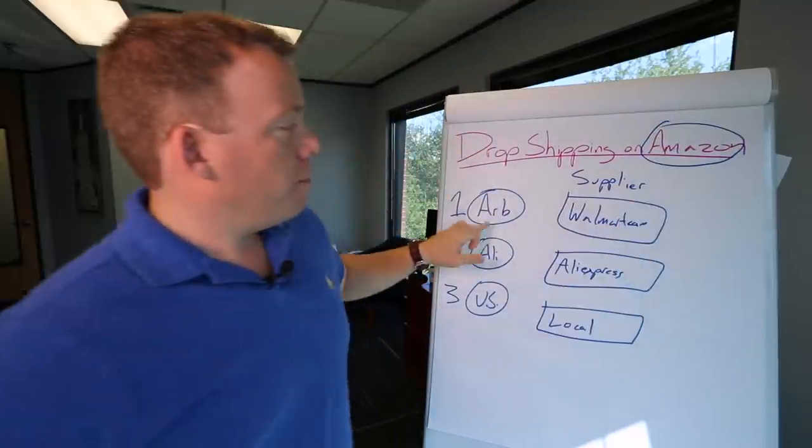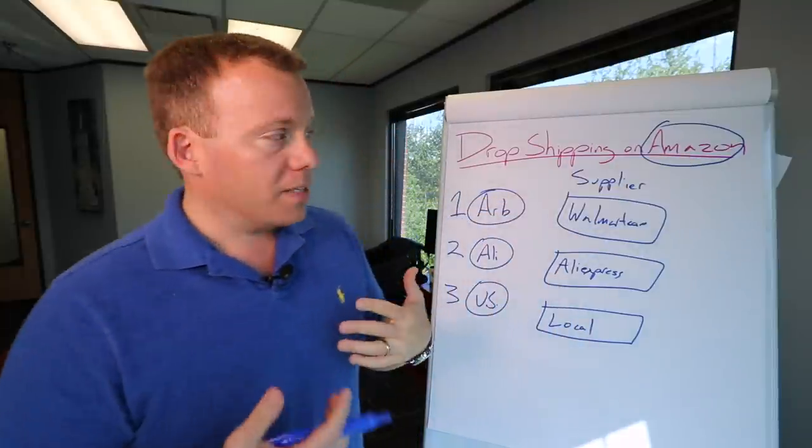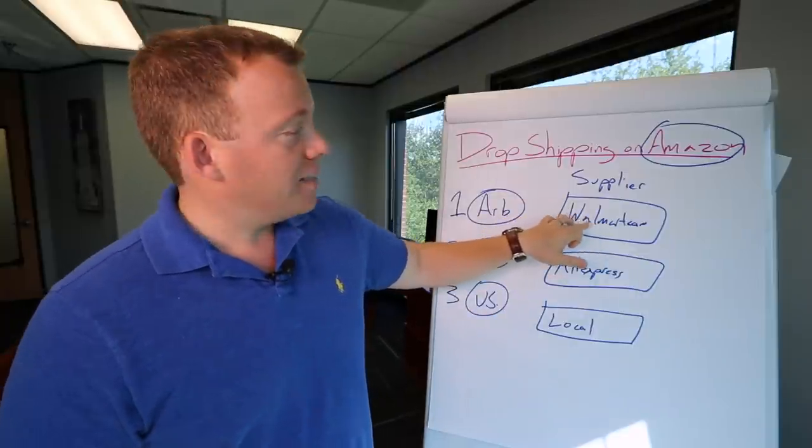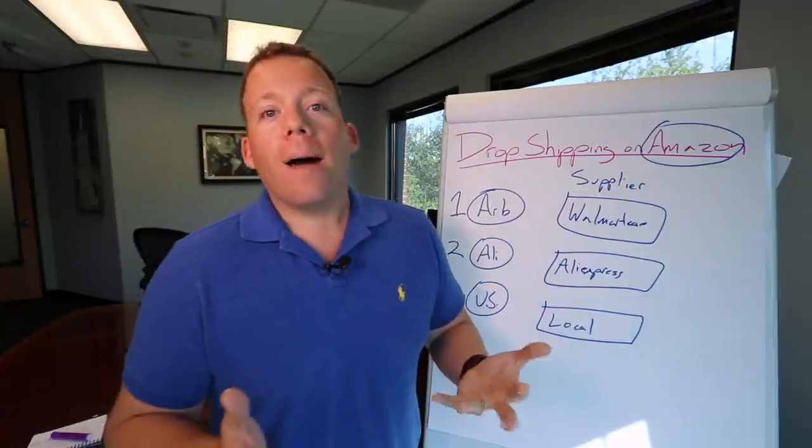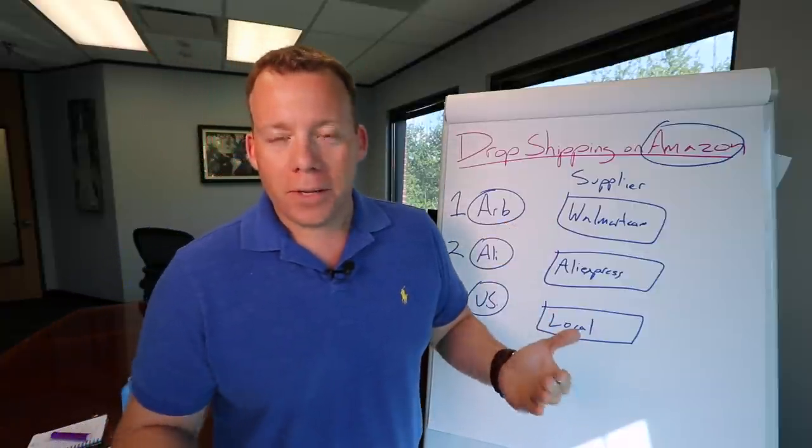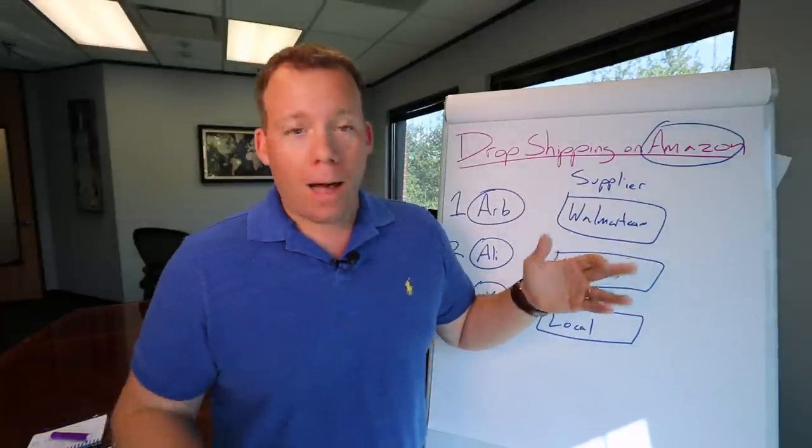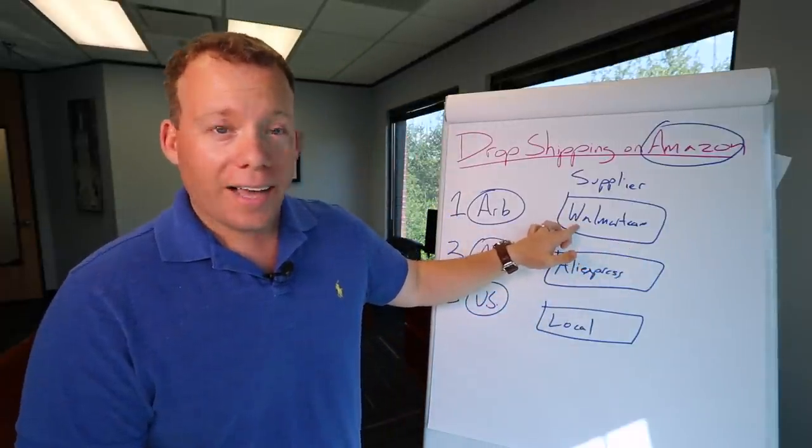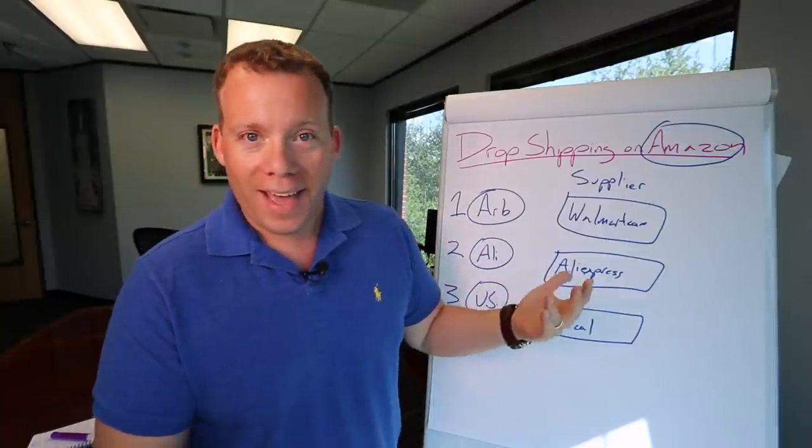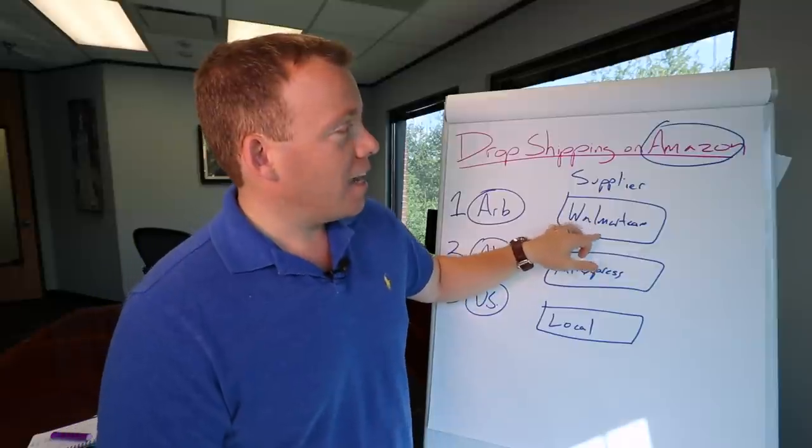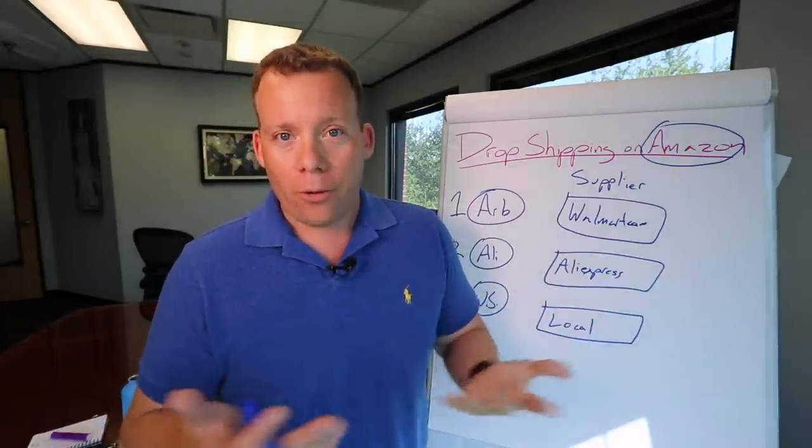Method number one here, the arbitrage model - trying to list something for sale on Amazon, then once you get the sale, you go ahead and you basically drop ship it from, I'm just going to keep using Walmart as the example. Now, here's the thing - can this work? The answer is yes, people do this and they make some money with it. The problem is that, first of all, it's not really a business because you're constantly trying to find products on Walmart that you could sell for more on Amazon.